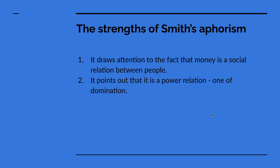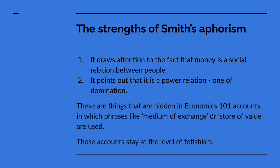The great strength of approaching it the way Adam Smith does is it draws attention to the fact that money is a social relation — a relation between people. It points out it's a power relation, one of domination and being dominated. These are things that get hidden in a standard first-year conventional economics course, where money is described as a medium of exchange or a store of value. But those stay at the level of what Marx called fetishism — they don't penetrate behind the scenes to the actual social relationship, which is the command over labour.